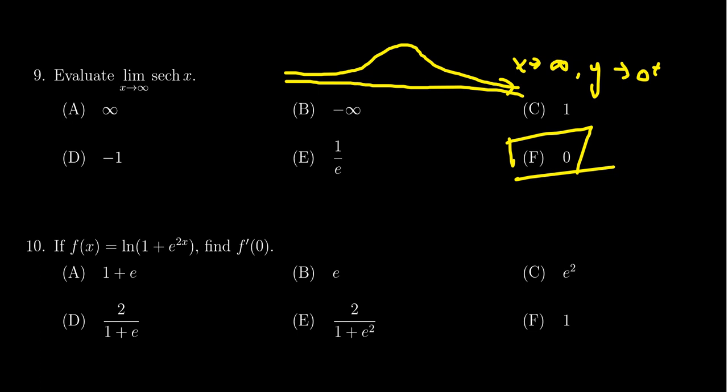Another way of approaching that is just to rely on the definitions and identities of these hyperbolic functions. So if we're trying to look for the limit of hyperbolic secant of x, that's the same thing as taking the limit as x approaches infinity of 1 over cosh.